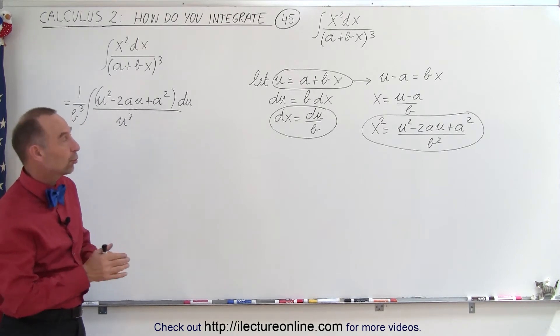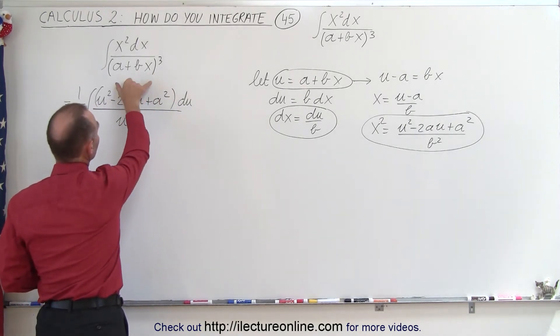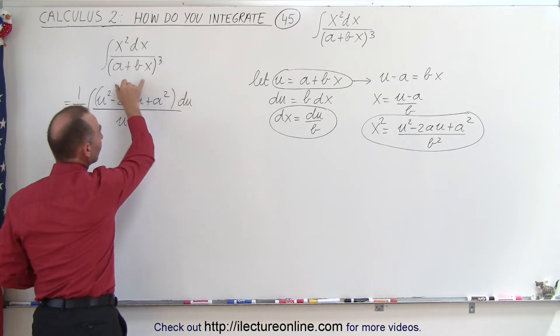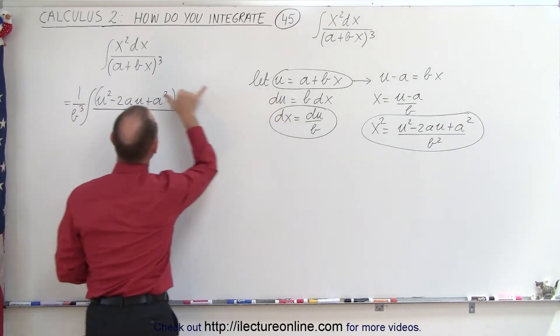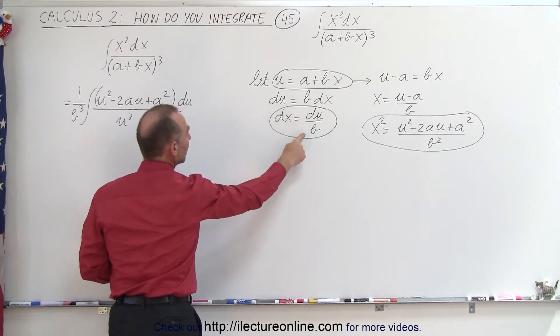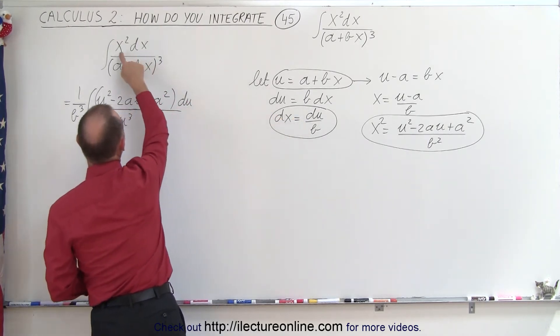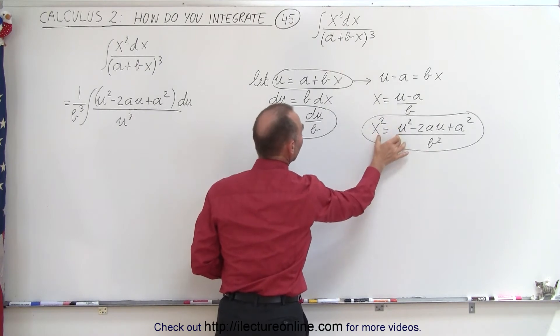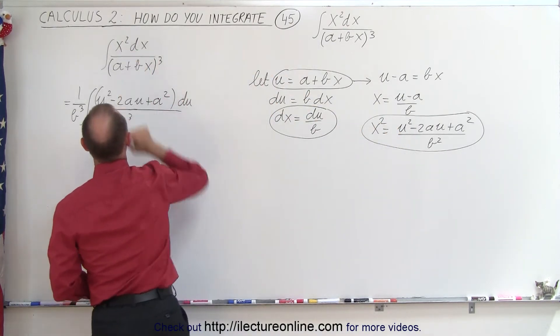The same approach will be used. We have this cubed here, but we're still going to use a substitution. Let u equals what's inside the parentheses. We then solve for dx, which is du over b, and we can solve for x in terms of u, square both sides, so we can then substitute that in for x squared.